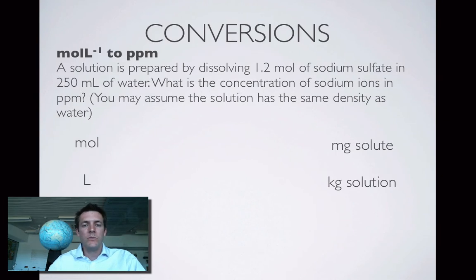Anyway, let's do the conversion the other way. So I'm given moles per liter and I'm turning it into parts per million. So am I actually told the moles per liter? Well, I'm not told the concentration in moles per liter, but I am told that I've got 1.2 moles of this stuff in every 0.25 liters.